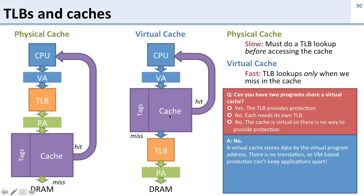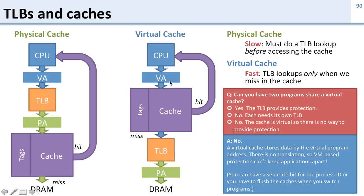There are ways to work around this. You can add a special bit so that instead of just sending the virtual address, you send the virtual address plus a bit identifying which program it is. Or every time you switch programs on the CPU, you can flush all the data from the cache. You can make this work, and it would be great because a virtual cache is much faster — you don't have to wait for the TLB the way you do with a physical cache.